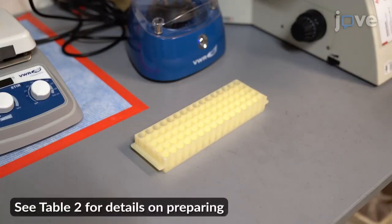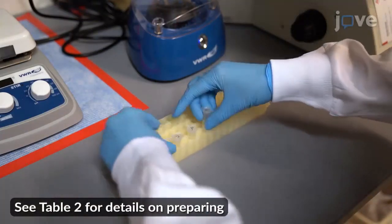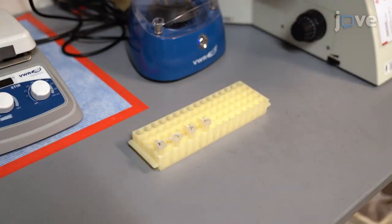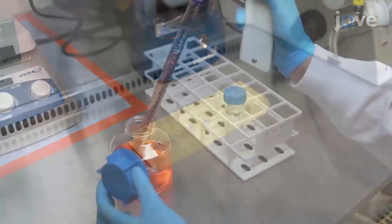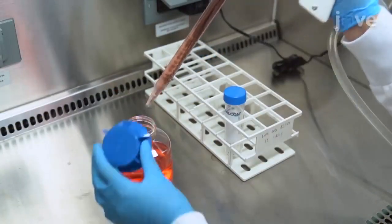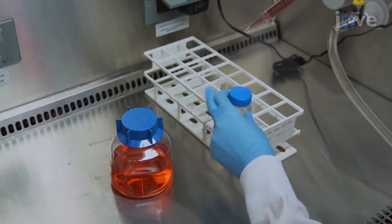To prepare the differentiation medium, first thaw the frozen small molecules and or growth factors at room temperature. Aliquot out the required amount of base medium and add the specified small molecules and growth factors to them.